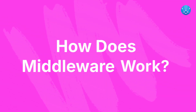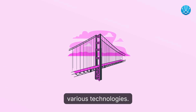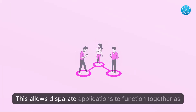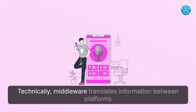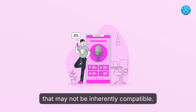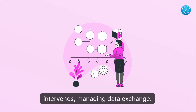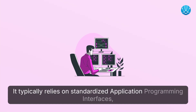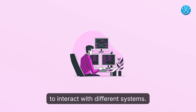How does middleware work? Middleware operates as a hidden translation layer connecting various technologies, allowing disparate applications to function together as a single system. Technically, middleware translates information between platforms that may not be inherently compatible. Instead of direct communication between applications, middleware intervenes managing data exchange. It typically relies on standardized application programming interfaces, or APIs, which provide reliable methods for developers to interact with different systems.